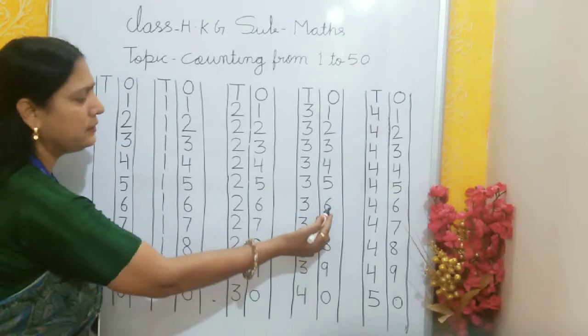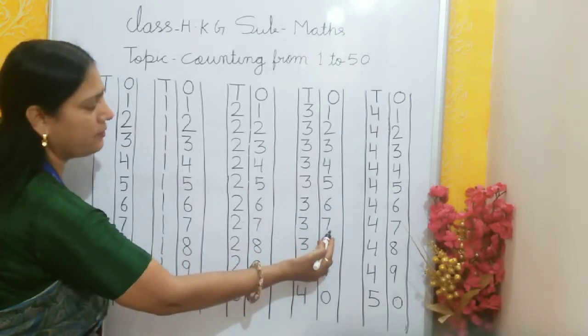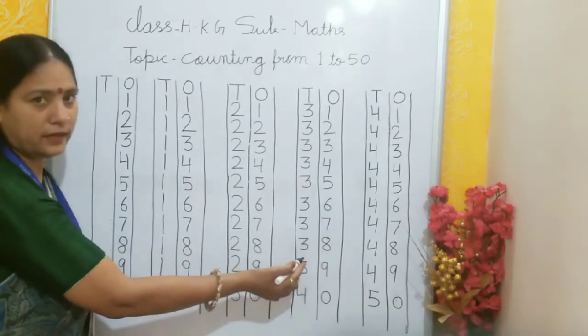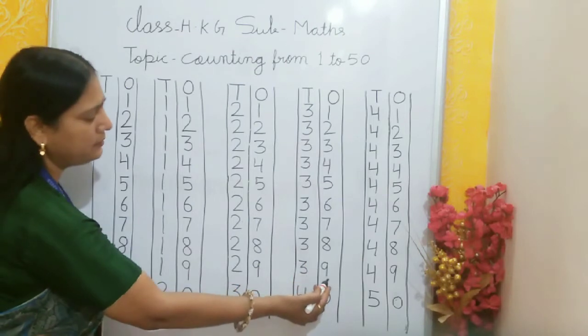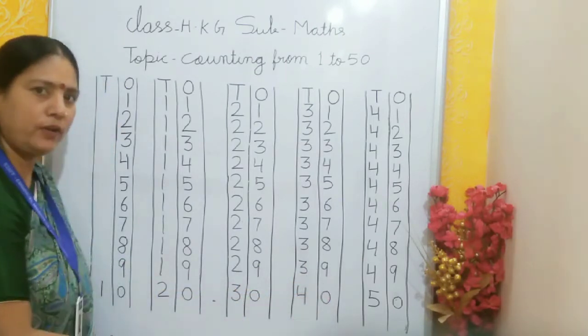3, 6, 36. 3, 7, 37. 3, 8, 38. 3, 9, 39. 4, 0, 40.